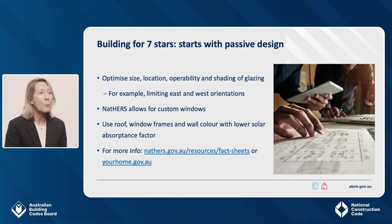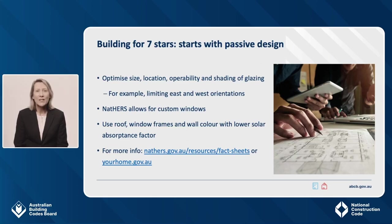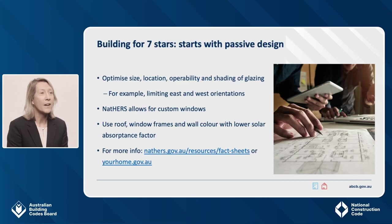Optimising the size, location, operability and shading of glazing is another important consideration. This could be to enhance cross ventilation or by strategically limiting glazing to the east and west orientations when appropriate. Improving the glazing is also worth considering — NatHERS includes both default and custom window options. Generally choosing default windows will result in a lower rating, so we recommend switching to a custom window where all specifications are known, as this allows for greater accuracy. Consideration should also be given to the colour of the roof, window frames and walls. Adding internal ceiling fans and increasing the R value of wall, floor and ceiling insulation can also assist in improving your rating.